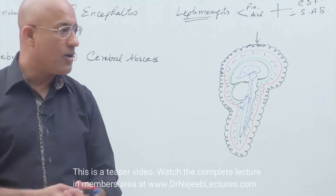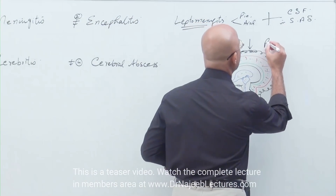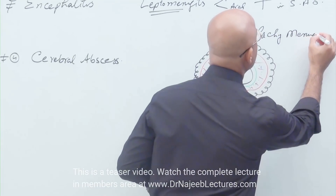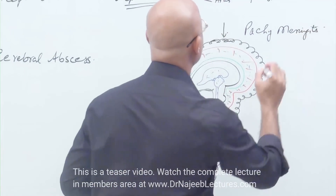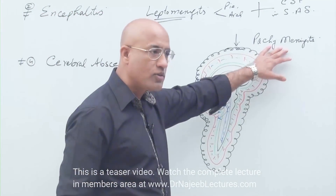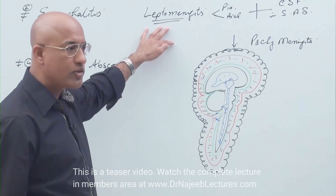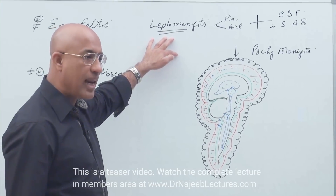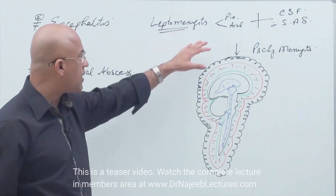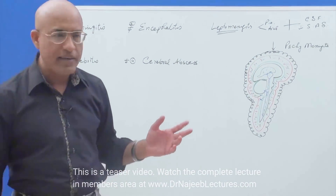Pachymeningitis — excellent answer. But don't put too much burden on yourself because pachymeningitis is not very common. Keep things simple: meningitis most of the time means leptomeningitis — inflammation of pia mater, arachnoid mater, and CSF present in the subarachnoid space.